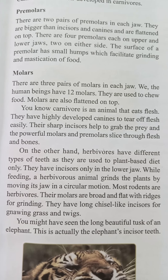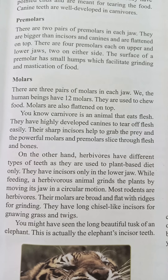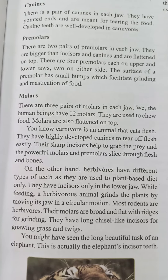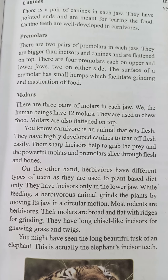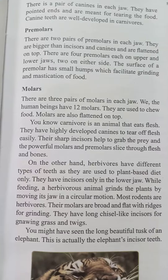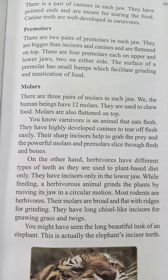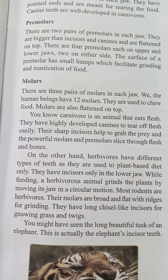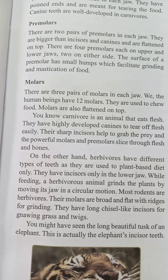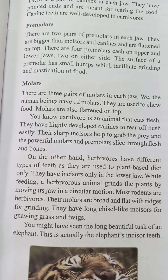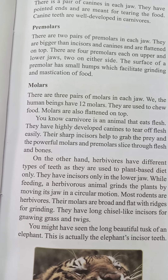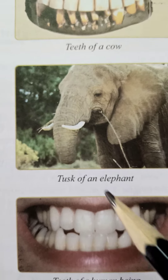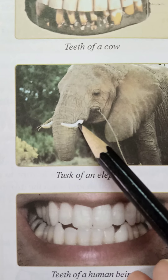You might have seen the long beautiful tusks of an elephant. This is actually the elephant's incisor teeth — what appears outside as tusks are actually the elephant's incisors, as you can see in this picture.